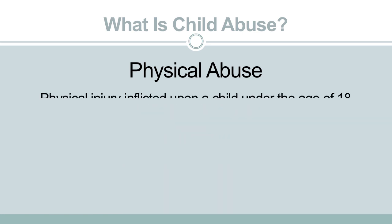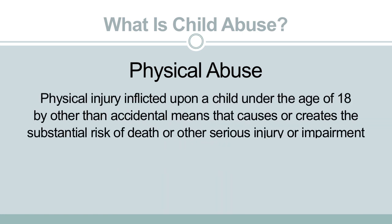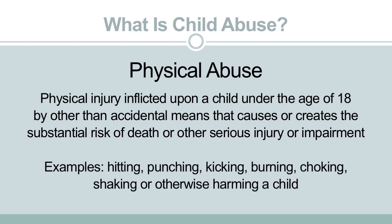Physical abuse is defined as physical injury inflicted upon a child under the age of 18 by other than accidental means that causes or creates the substantial risk of death or other serious injury or impairment. Examples of physical abuse are hitting, punching, kicking, burning, choking, shaking, or otherwise harming a child.